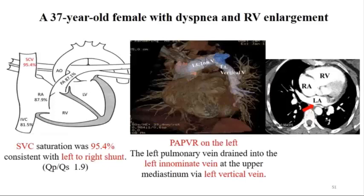Scenario 1: normal PVR with a shunt but no PH, with symptoms and significant shunt. QPQS should be 1 normally; above 1.5 is significant. Below 1 indicates Eisenmenger physiology and shunt reversal. If the patient has increased QPQS above 1.5 with any signs of RV failure and normal PVR, you can refer for surgery. We had a patient with partial anomalous pulmonary venous return on the left side joining a vertical vein—she had shunt correction and is now asymptomatic on no treatment.